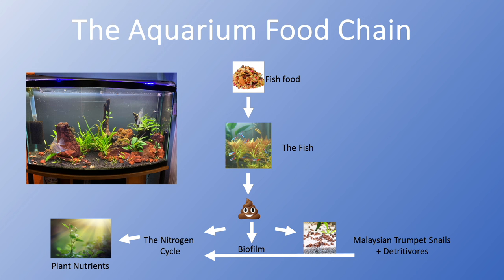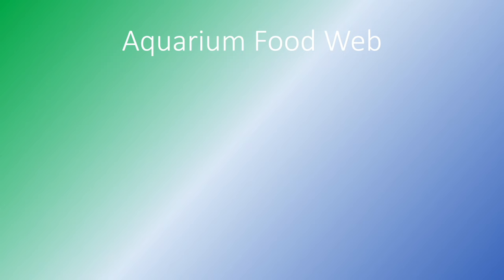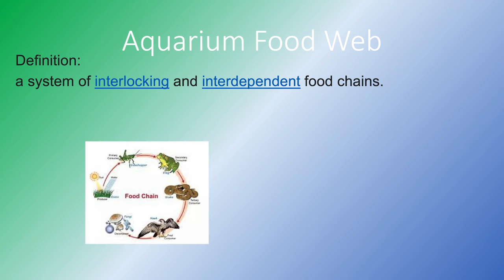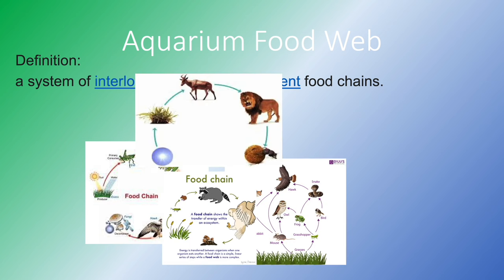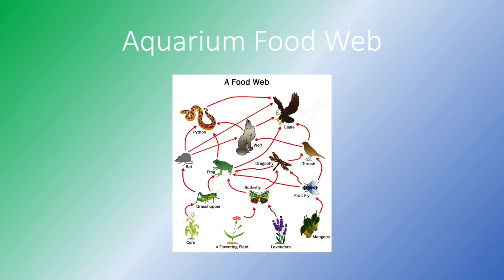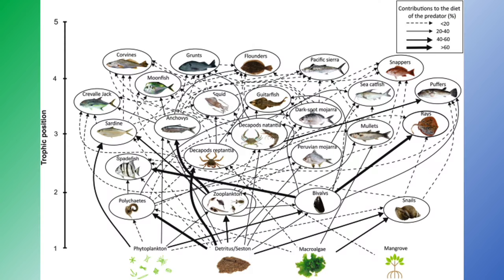Let's get into the difference between an aquarium food web and an aquarium food chain. An aquarium food web is a system of interlocking and interdependent food chains — multiple food chains that overlap. If you Google food web, this is what you get. I was looking for a more fishy one and found this food web structure of a subtropical coastal lagoon. It's not freshwater, but it's still pretty cool.